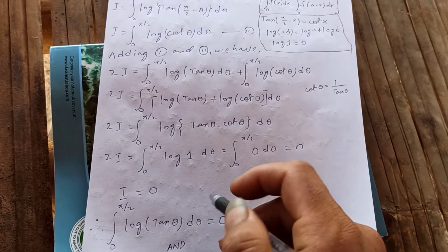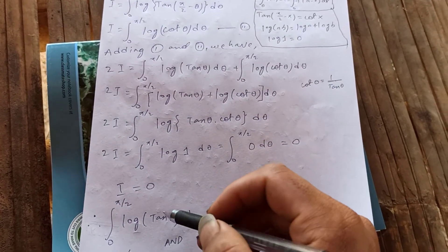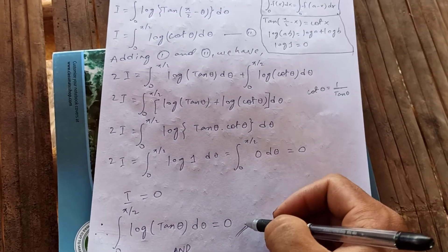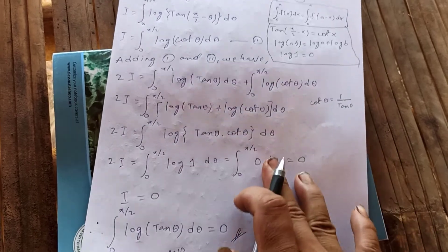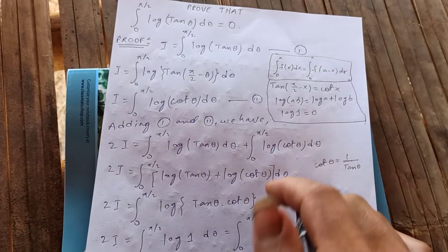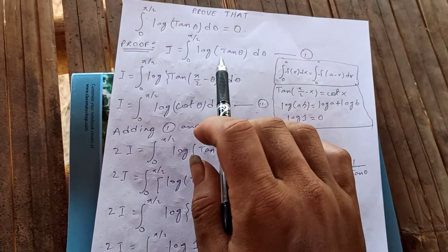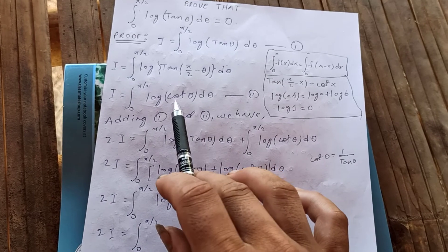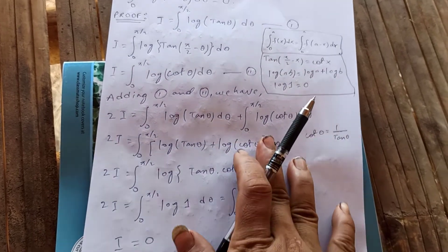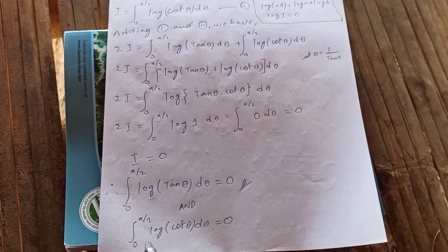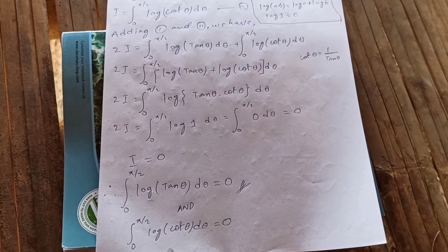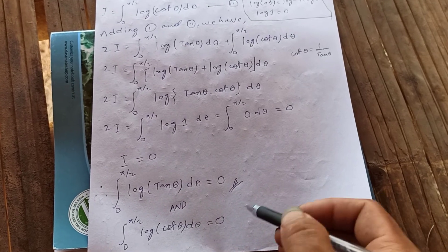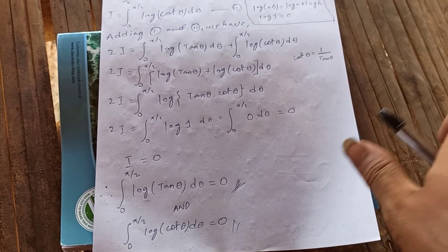Therefore the integral from 0 to pi over 2 of log(tan θ) dθ is just 0. And since the integral of log(tan θ) dθ is 0, it also follows that the integral from 0 to pi over 2 of log(cot θ) dθ is also 0.